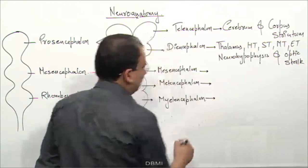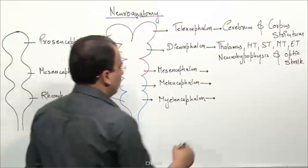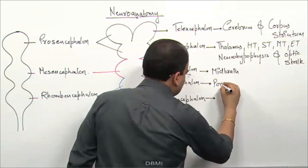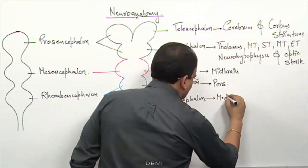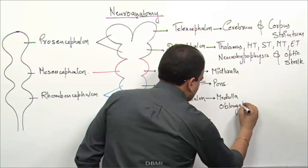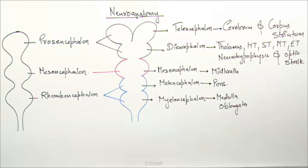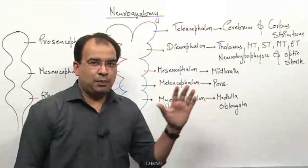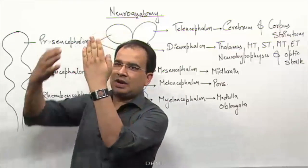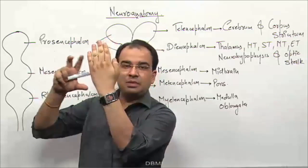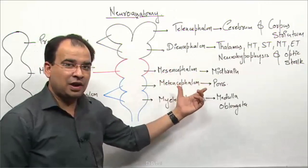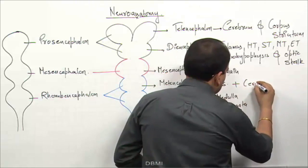The mesencephalon, metencephalon, and myelencephalon form the three parts of the brainstem. The mesencephalon will give rise to the midbrain, the metencephalon to the pons, and the myelencephalon to the medulla oblongata. As for the cerebellum, it is mostly behind the pons, and since pons is derived from metencephalon, the metencephalon gives rise to both the pons and the cerebellum.